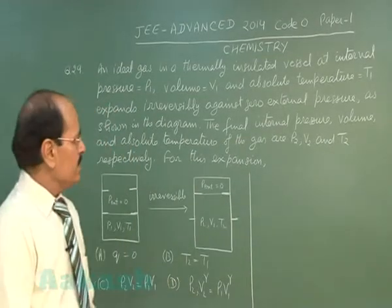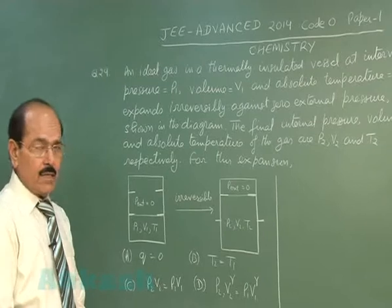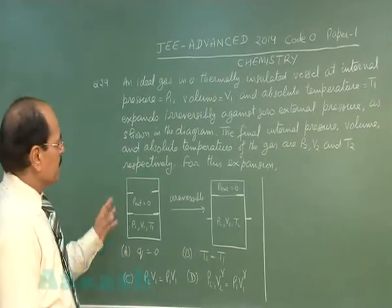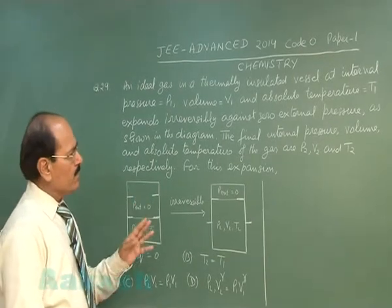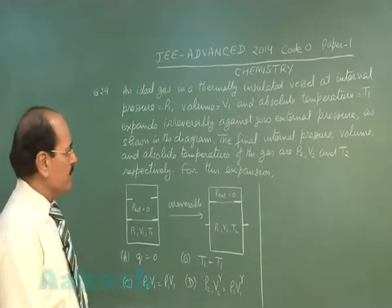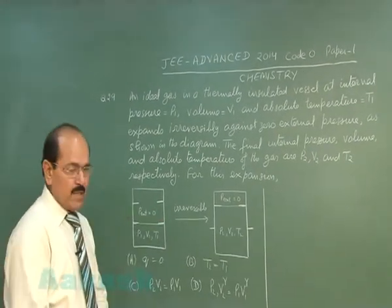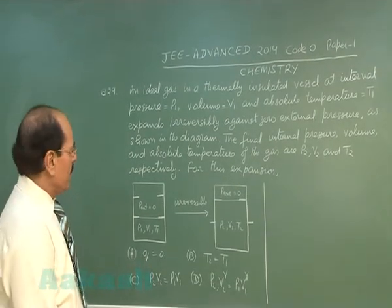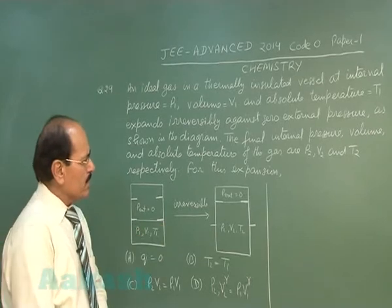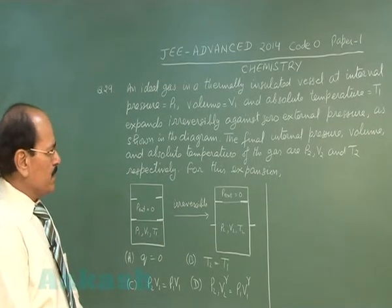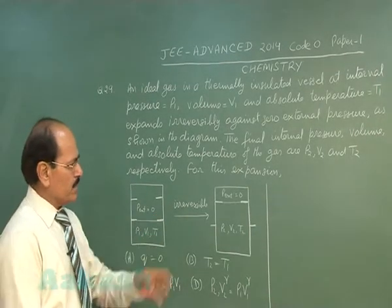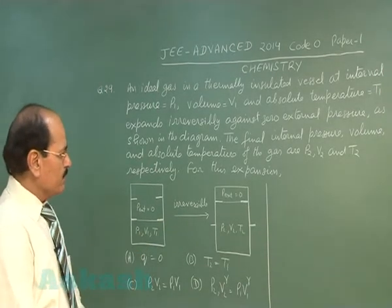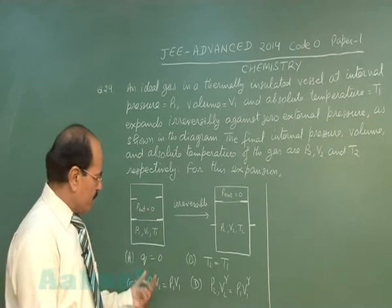Question number 29 says: an ideal gas in a thermally insulated vessel at an internal pressure P1, volume V1 and absolute temperature T1 expands irreversibly against zero external pressure, as shown in the diagram. The final internal pressure, volume and absolute temperature of the gas are P2, V2 and T2 respectively. For this expansion, 4 options are given.